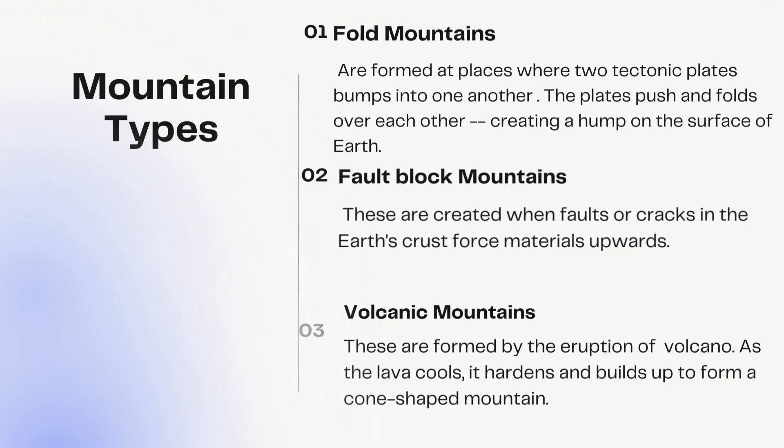Fold mountains are formed at places where two tectonic plates bump into one another. The plates push and fold over each other, creating a hump on the surface of the earth.